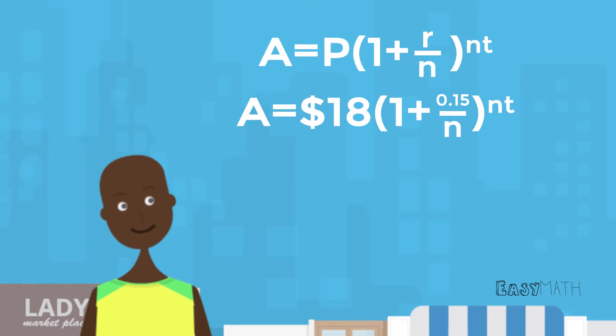Next, N is how often he is being charged in a period of time, or how often interest is compounded. Lucky for Harry, he has a good friend that will only charge him once per day, so N equals 1.